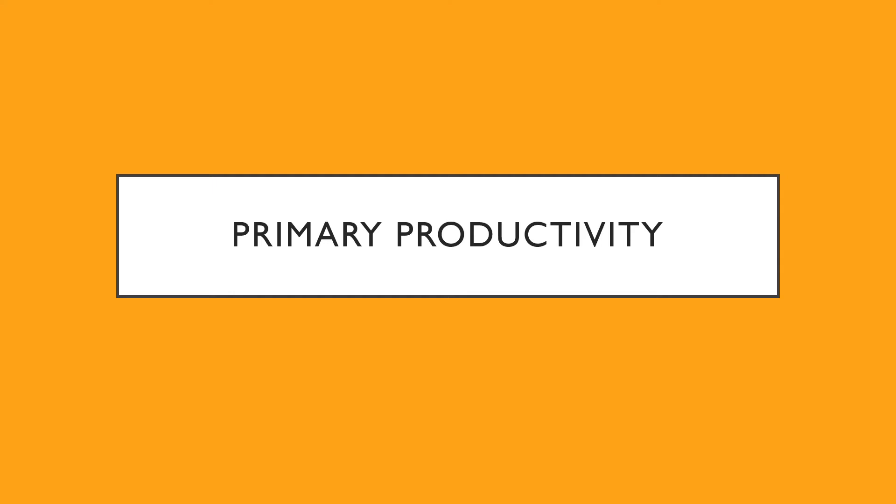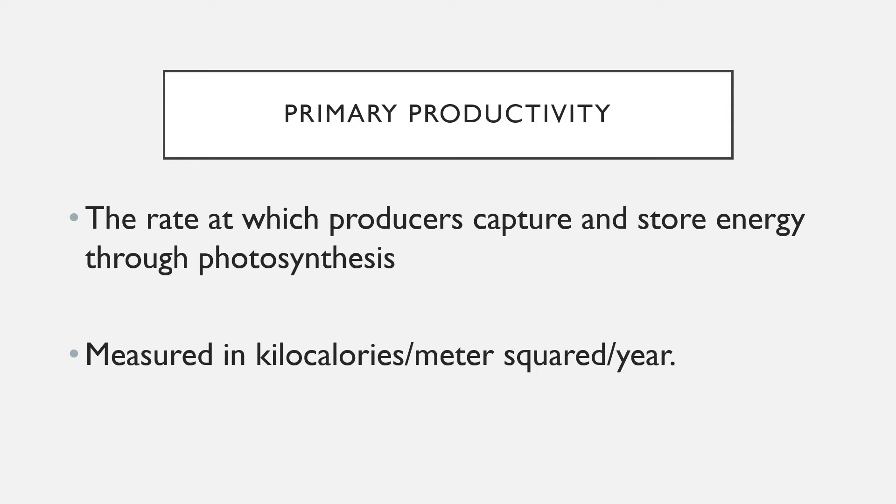I've got another PowerPoint here tied into energy flow in ecosystems — just some key concepts and key terms you need to know, tied to the capturing of energy by plants or producers. So primary productivity: primary — think first; productivity — think producers, photosynthesis. The definition of primary productivity is the rate at which producers capture and store energy, generally through photosynthesis.